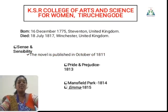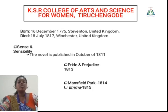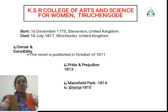She was born on 16 December 1775. She died on 18 July. Her work Sense and Sensibility was published in October 1811. Pride and Prejudice was published in 1813. Her next work, Mansfield Park, was published in 1814. And Emma was published in 1815. Jane Austen is one of the most famous and wonderful writers in English literature.